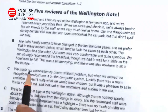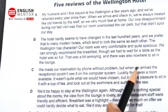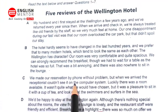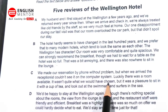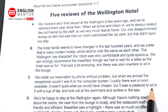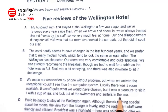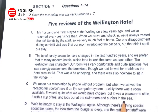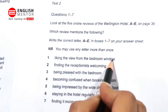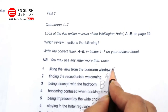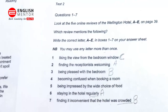Now go to C: 'We made our reservation by phone without problem, but when we arrived the receptionist could not see it on the computer system. Luckily there was a room available — it wasn't quite what we would have chosen — but it was a pleasure to sit in with a cup of tea and look out at the swimmers and surfers in the sea.' Going to option one — liking the view from the bedroom window — though they were not happy about the room, they liked the view as they could look at the swimmers and surfers. So the answer for option one is C.